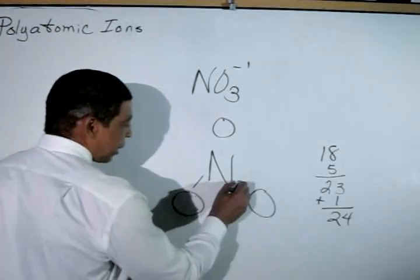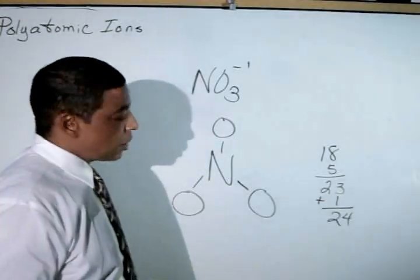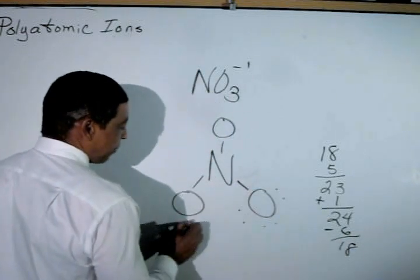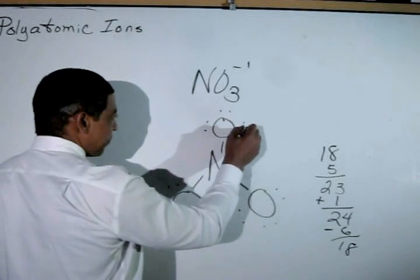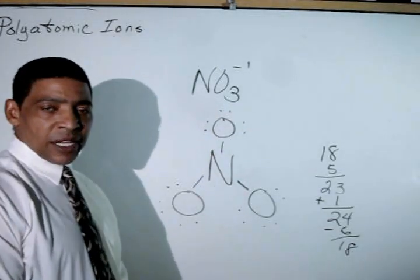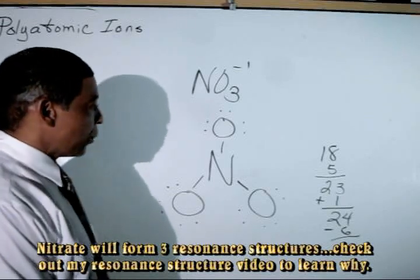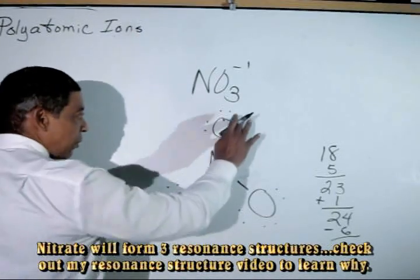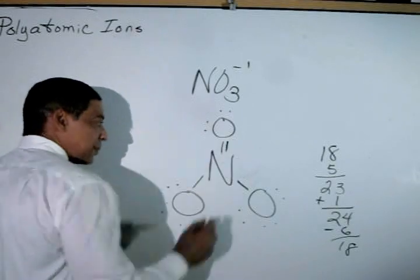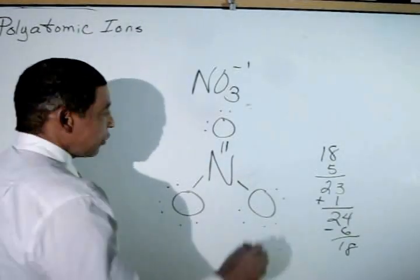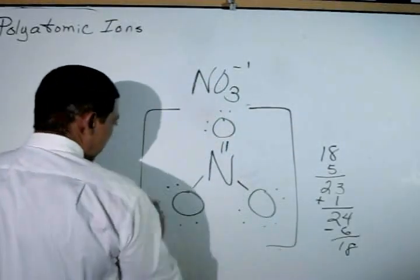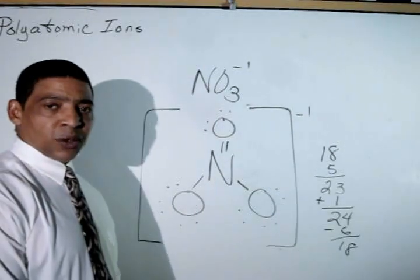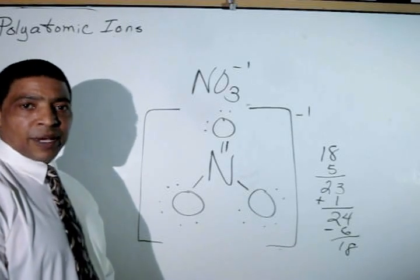To complete the structure, connect the central atom to the perimeter oxygens, which will consume six electrons, leaving eighteen, which are now shared equally by the perimeter atoms. Clearly, the nitrogen is not satisfied. Therefore, in order to satisfy the nitrogen, we must make a double bond between the N and one of the O's — remove two dots and make another bond. Simply place the structure in brackets and write the oxidation state of minus one outside of the brackets. This represents the Lewis structure for the nitrate polyatomic ion.